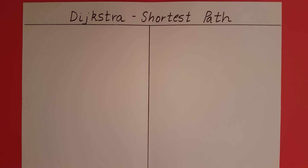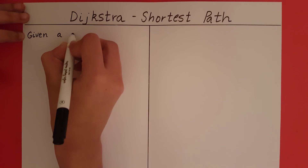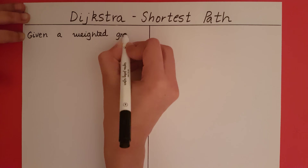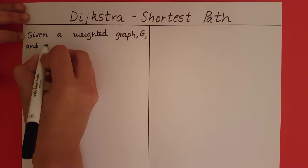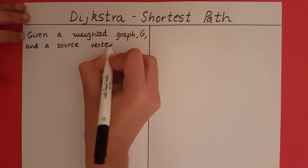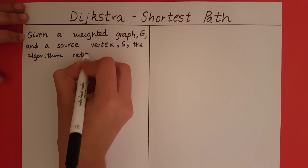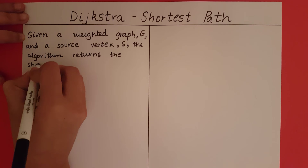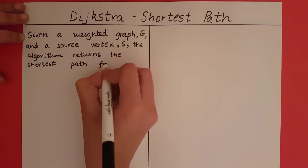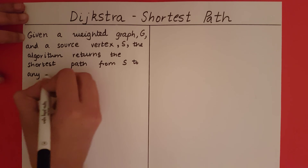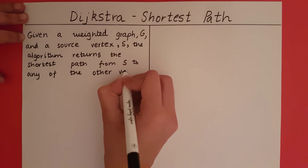Dijkstra's algorithm for finding the shortest path. Given a weighted graph and a source vertex, say S, the algorithm returns the shortest path from S to any of the other vertices.